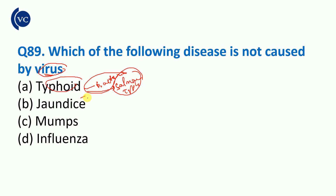Jaundice is caused by the hepatitis B virus. Mumps is also a viral disease. Influenza and common cold are caused by rhinovirus — these are viral diseases. Typhoid, however, is a bacterial disease caused by Salmonella typhi.